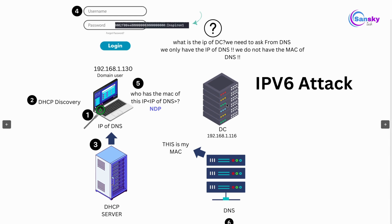In this scenario we have a DC and also clients on the left side that want to log in. At first the system will be turned on, and before logging into the domain it will send a DHCP discovery in order to get its DHCP configurations. In response, the DHCP server will give the IP address of the system, the subnet gateway, and also the IP of the DNS server.